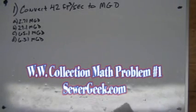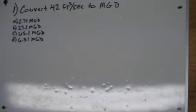Okay, problem number one from SewerGeek.com, wastewater collection book. The link to the book can be found in the description below.